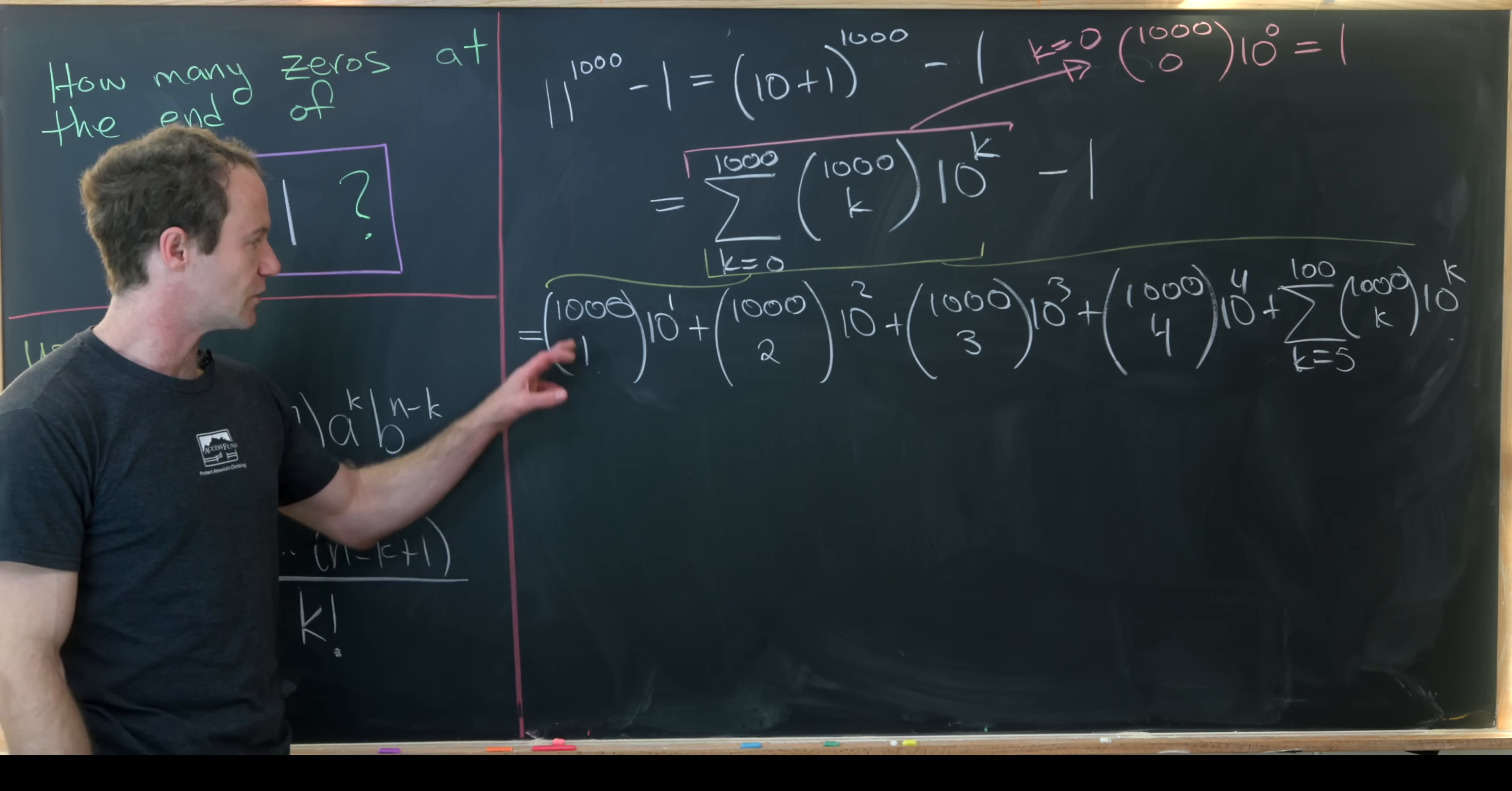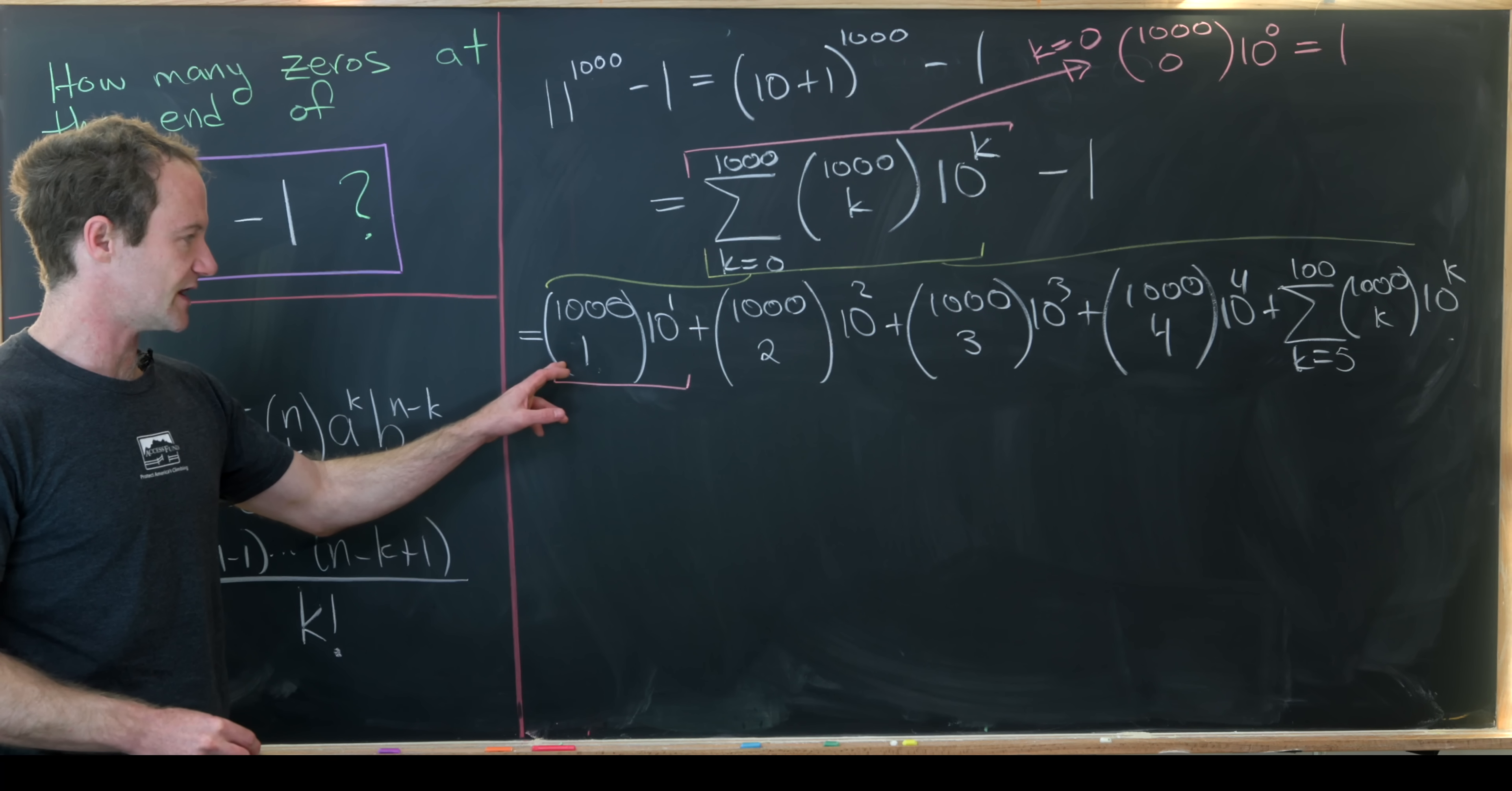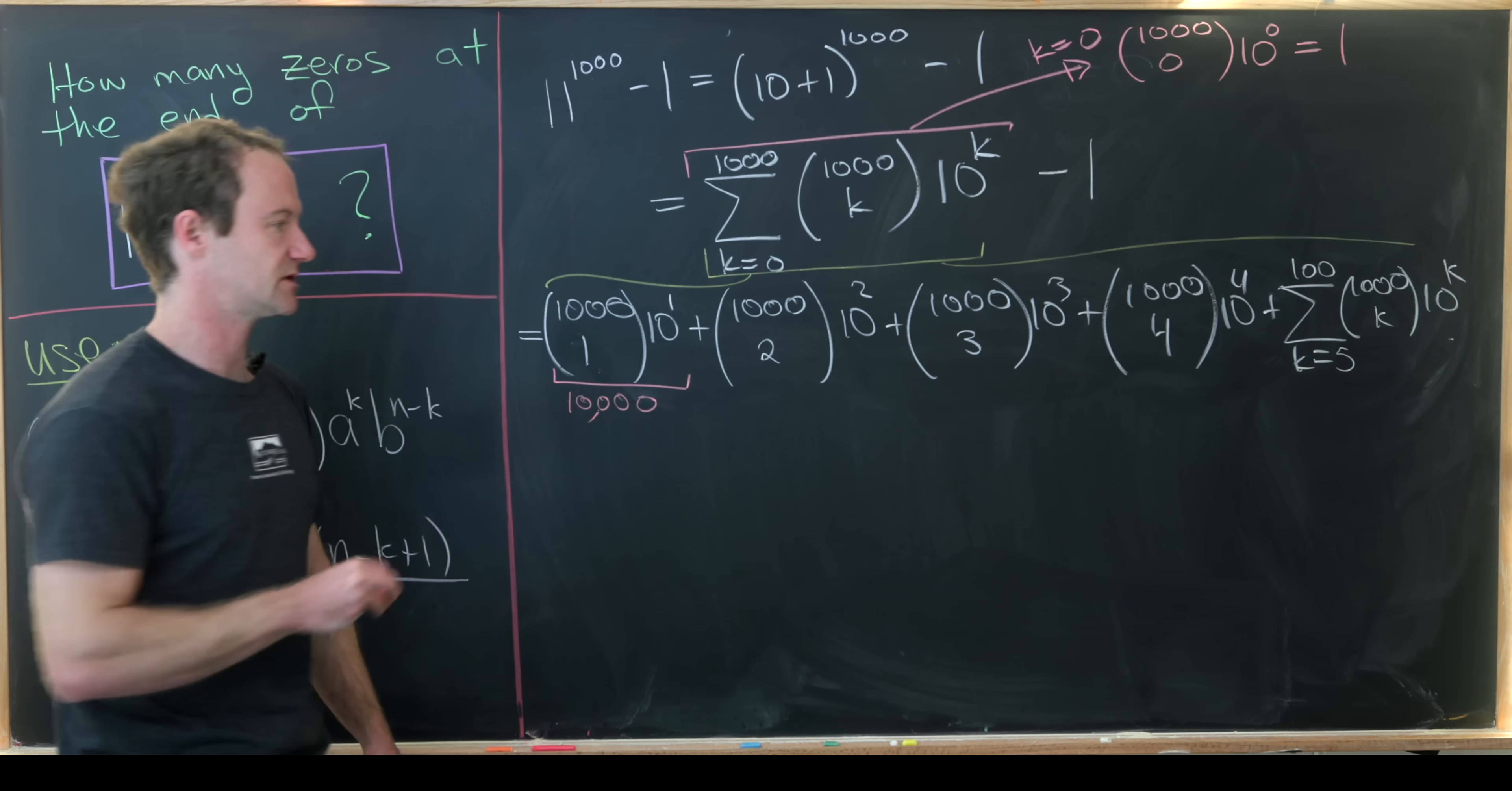Okay so by our definition of the binomial coefficient we know that 1,000 choose 1 is just equal to 1,000. So that means this right here will give us 1,000 times 10 or in other words 10,000.